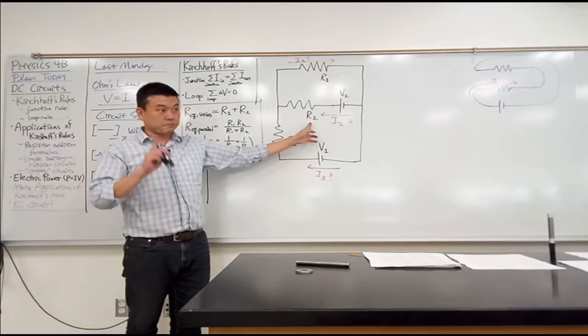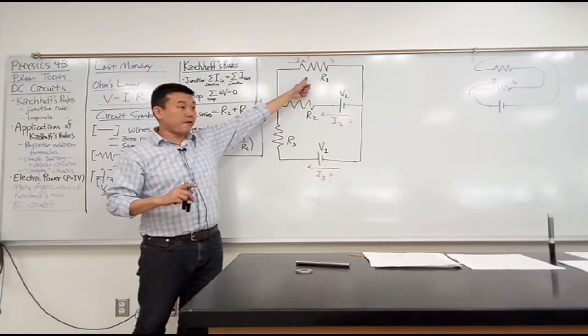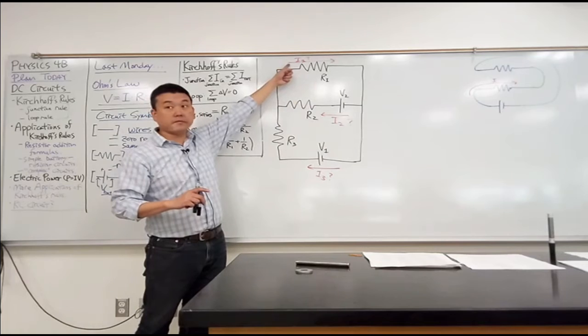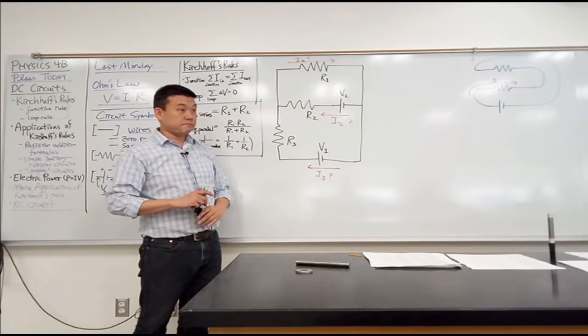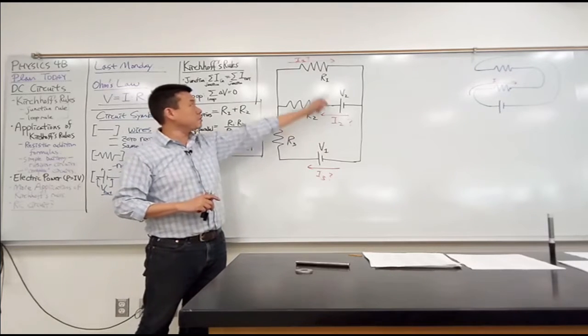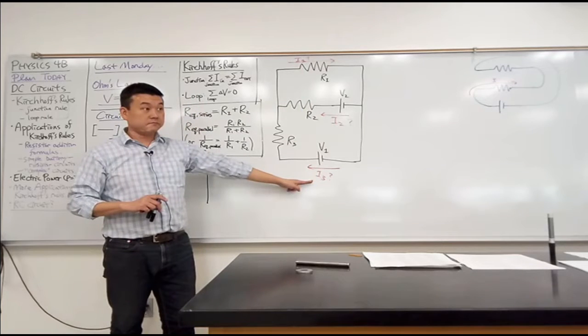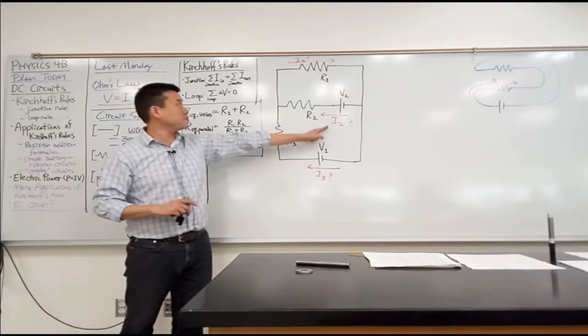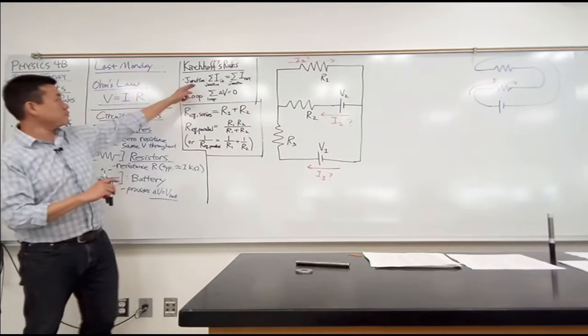R2 in series. Look carefully. Current that's going through R2, must that flow through R1? As in, can you say that I2 must be equal to I1? Look at it carefully. If you are saying I2 is equal to I1, what are you saying about I3? I2 is equal to I3. Not equal. If you are saying I2 is equal to I1, what is I3? No, no, no. Use the junction rule.